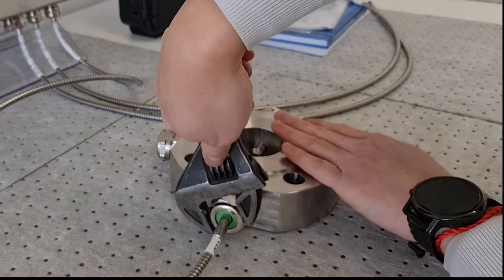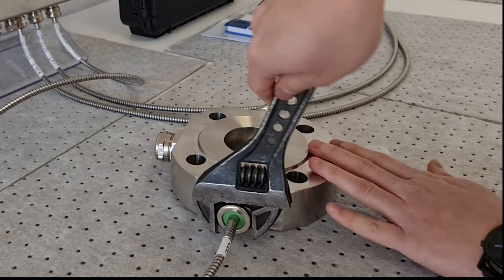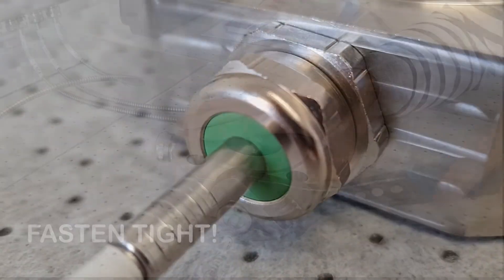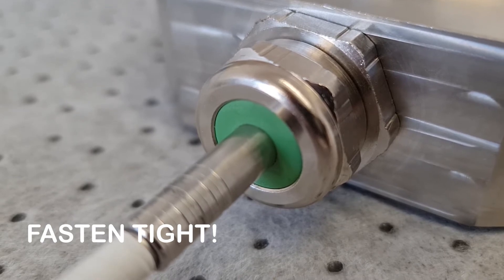The cable glands on the measurement cell should be firmly and tightly fastened using a spanner. When tightened, there should be no gap visible between the cable gland sealing element and the fiber optic cable.